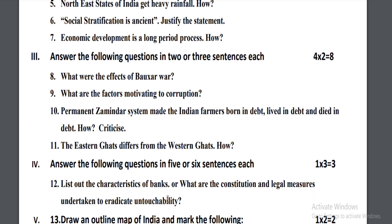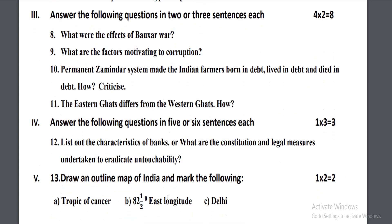In the fifth main, you have to draw an outline map of India and mark the following — three places are given for marking, and the total marks for this section is two marks. You have to practice how to answer the questions using this question paper, as this is only a model question paper.